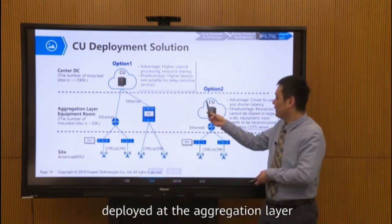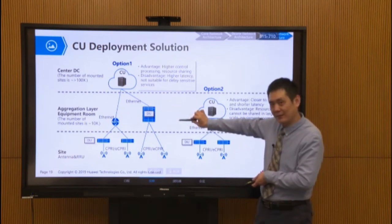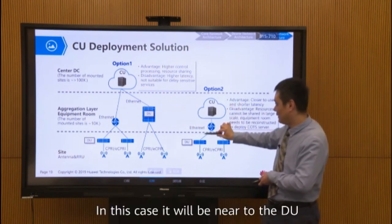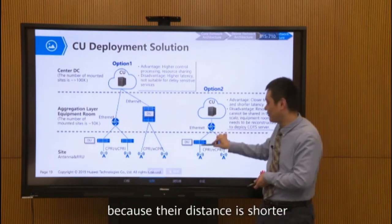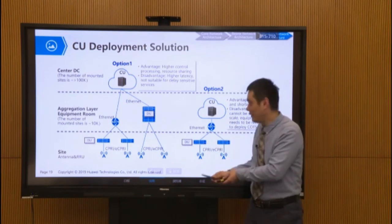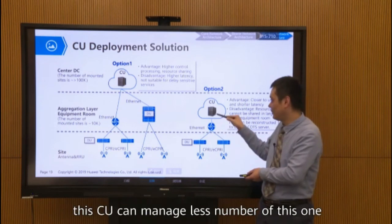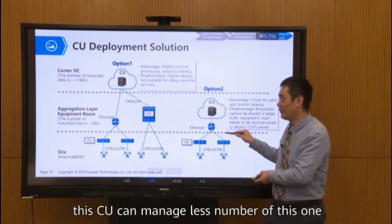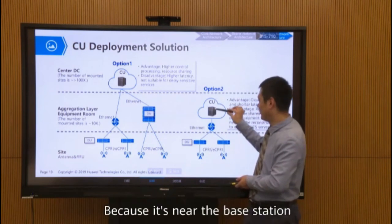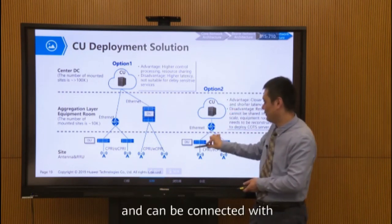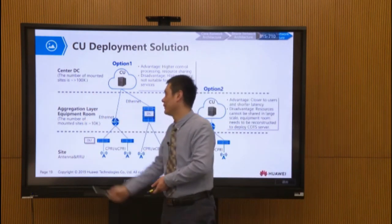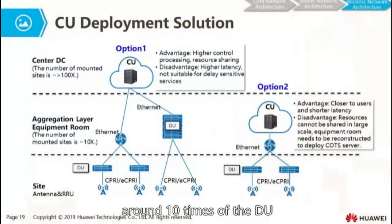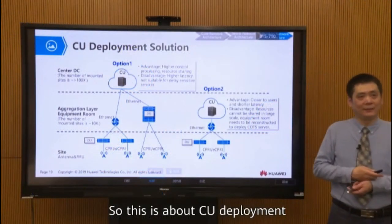The CU can also be deployed at the aggregation layer. In this case it will be closer to the DU, so the delay will be shorter due to the shorter distance. The shortcoming is that this CU can manage fewer DUs because it is near the base station and connects to fewer base stations. A center DC-deployed CU can manage around 100 DUs, while an aggregation layer CU can only manage around 10.